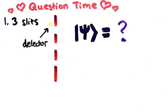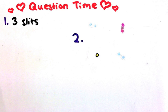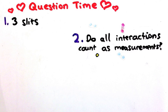The second question is about what counts as a measurement. I kind of implied that interactions with air and light count. Do you think all interactions are measurements?